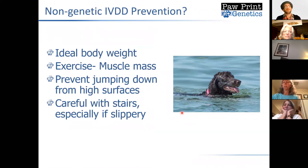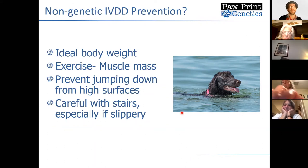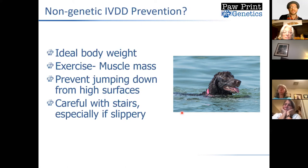People ask me all the time what they can do to make their dog less likely to develop IVDD. There's not a lot of great answers to that, but there are a couple of reasonable things to consider. One is to keep your dog at an ideal body weight and not let them become obese — that's going to be huge. Exercise and muscle mass play a really important role in keeping the spine in good health and preventing the possibility of these disc ruptures. These are probably the two most important factors in preventing dogs from having ruptures.